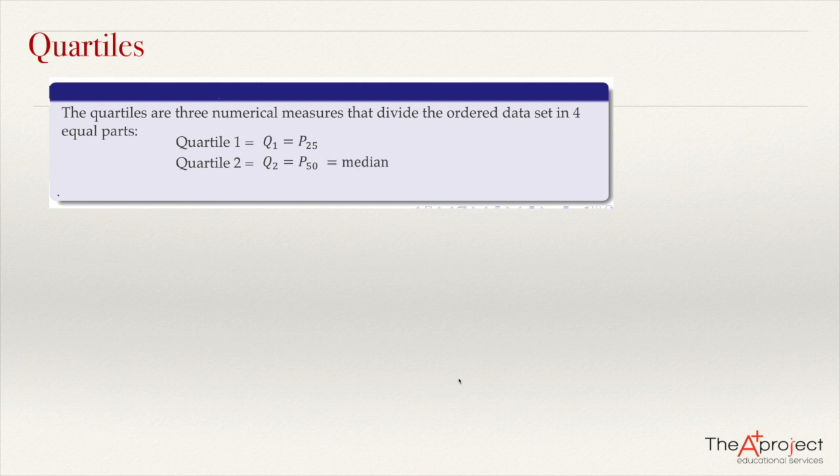And finally, we have quartile 3, or the third quartile, symbolized Q sub 3, and it is the same as percentile 75.